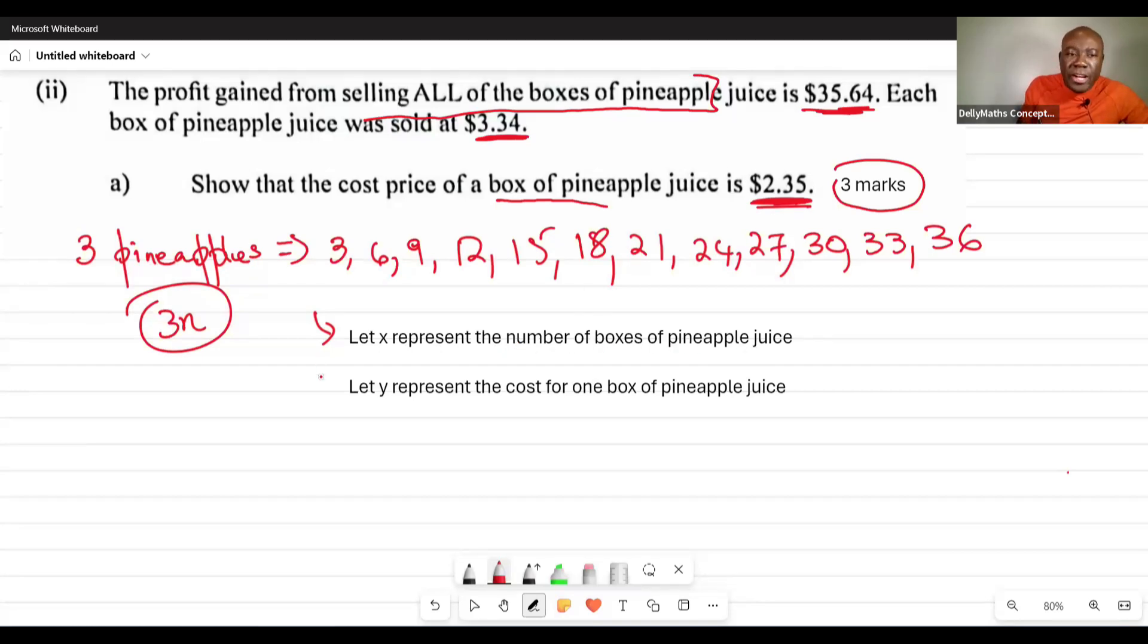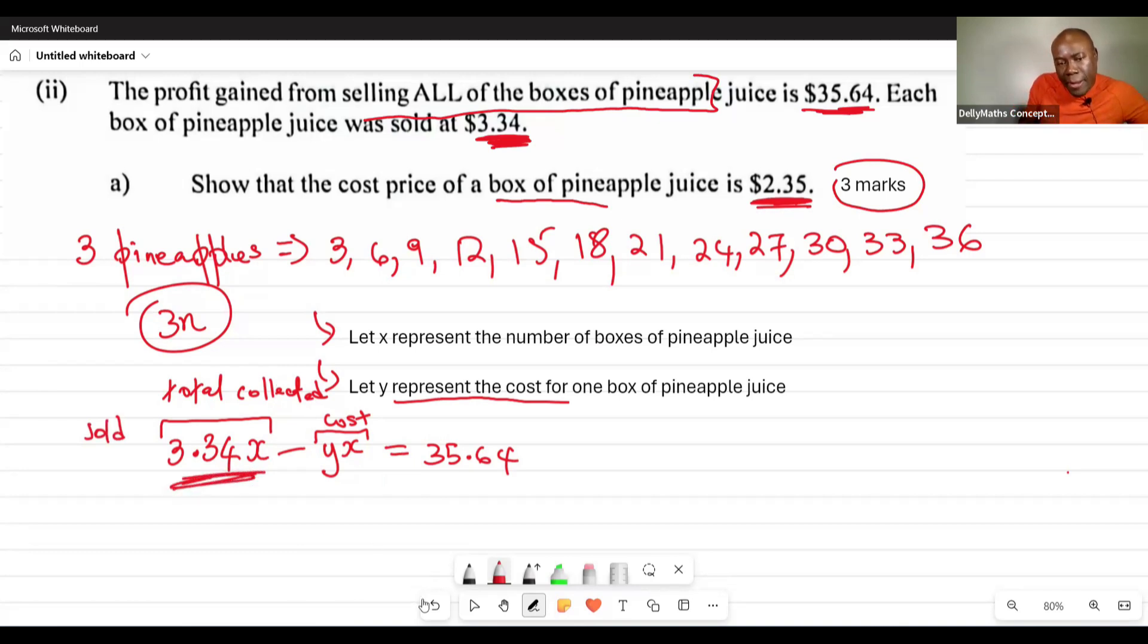Let y represent the cost for one box. If one was sold for $3.34, we multiply $3.34 times x because x represents the number sold. This gives us the total money collected. We subtract from this the price for one times how many were sold, which is y times x. When you subtract this, you get $35.64 profit.